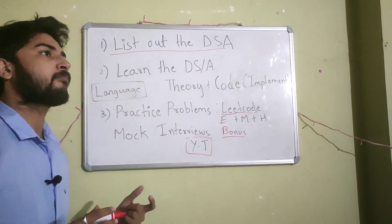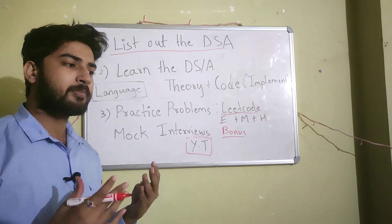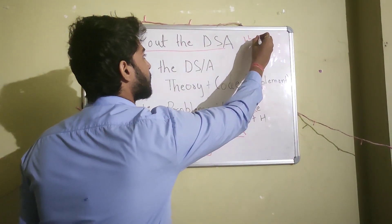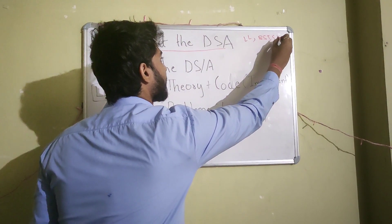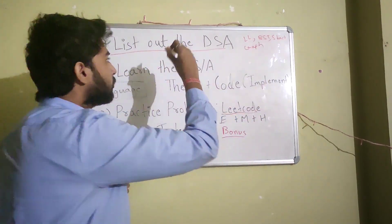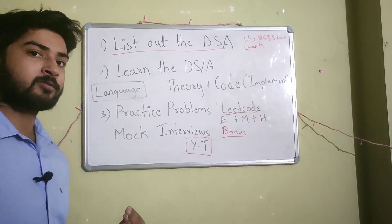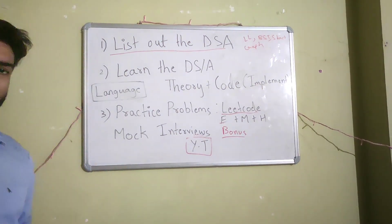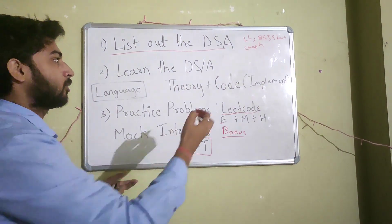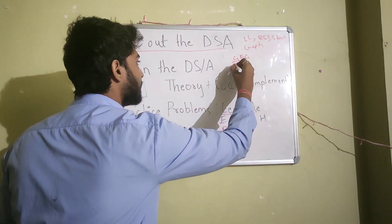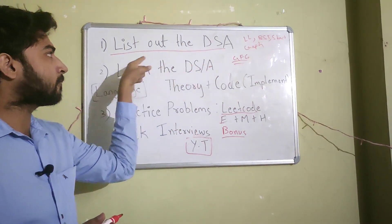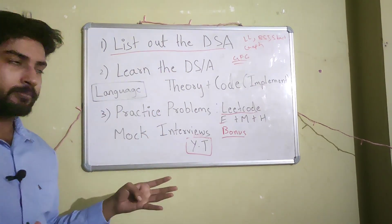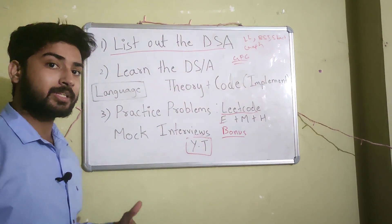The first step is to list out the DSA. When you go for placements, companies will ask you problems from certain data structures and algorithms — for example, linked list, binary search tree, stack, queue, graph, etc. Get a list of all the data structures and algorithms which are important for placements. Make a list on Google Docs or any note-making website. Go on GeeksforGeeks — it has everything for computer science students and has the list of all DSAs relevant to placements. I will also give a link in the description.